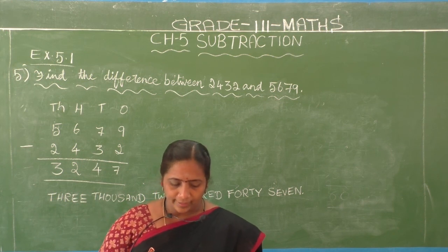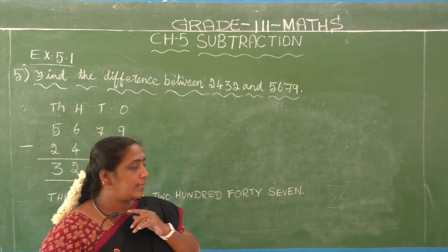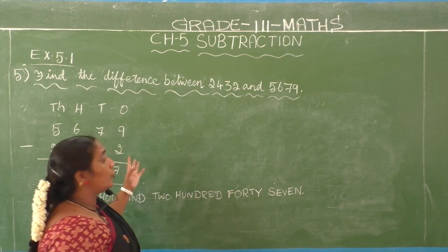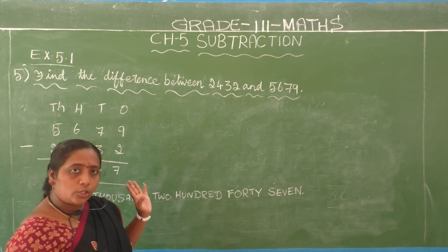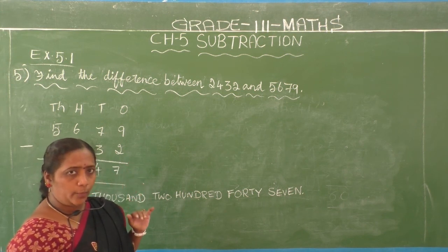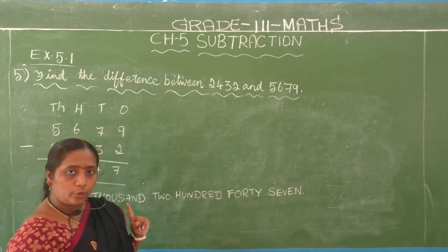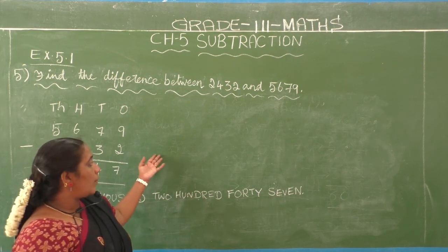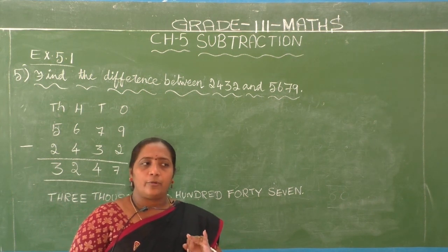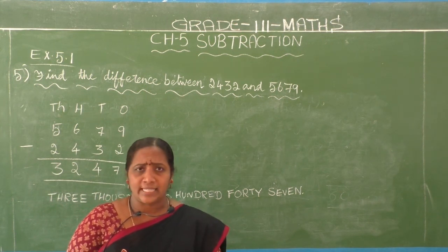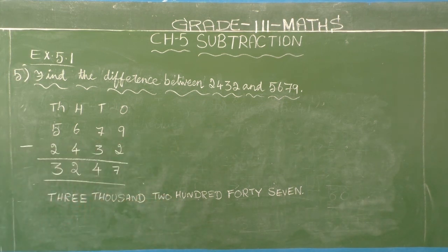In the next class we will see exercise 5.2. Copy the fourth and fifth sections only in your classwork note. All other sums do in your book itself where they gave the space. That is the homework. Thank you.